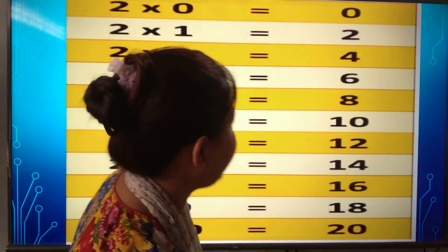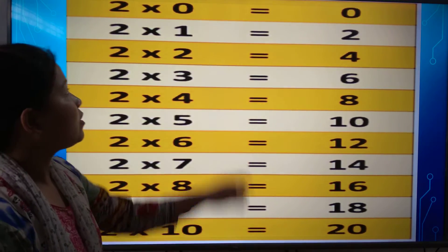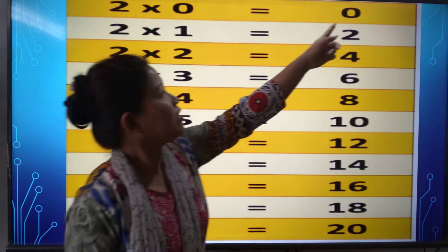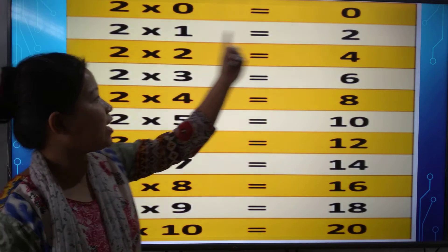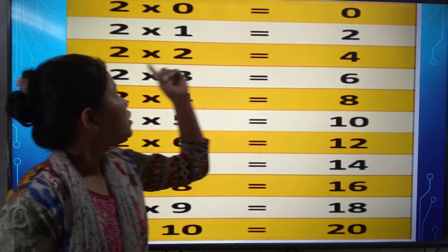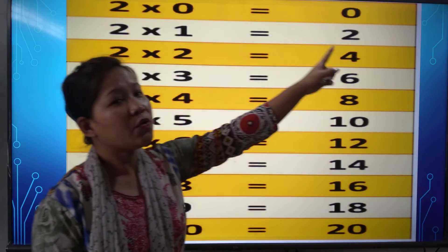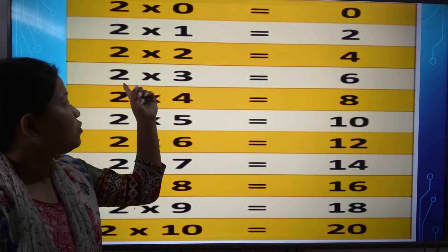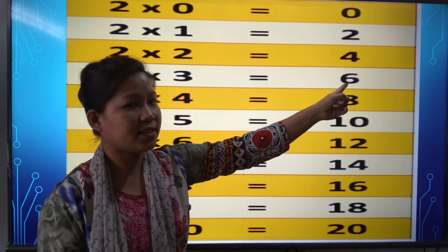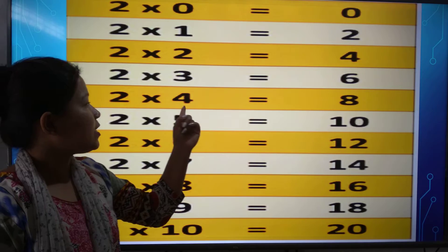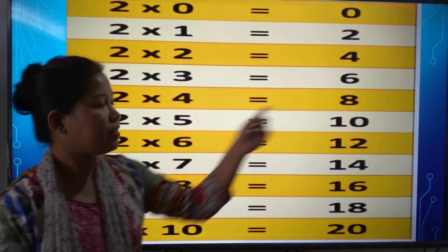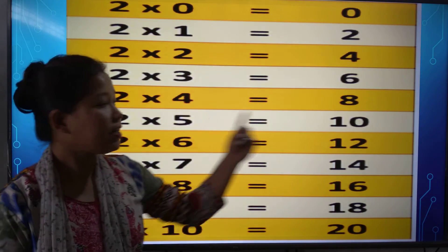Now look at here and read with me. 2 0s are 0. 2 1s are 2. 2 2s are 4. 2 3s are 6. 2 4s are 8. 2 5s are 10.